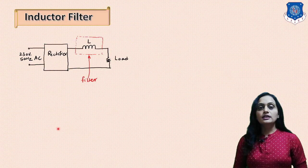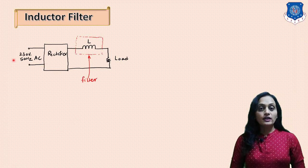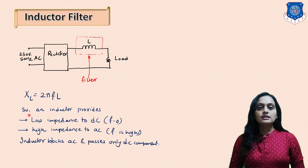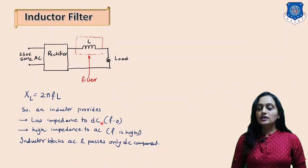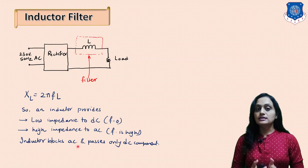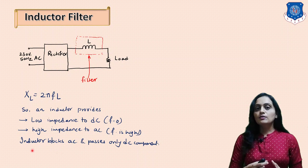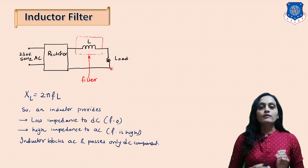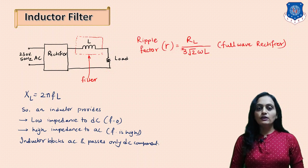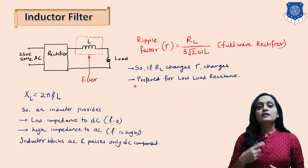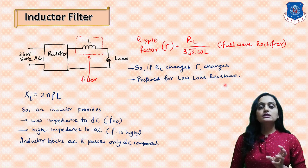Now we will see the inductor filter. The circuit diagram for the inductor filter is as shown. We have the rectifier block connected to the inductor, which is connected to the load. The inductive reactance XL equals 2πFL. This inductor provides low impedance path for the DC signal, where F equals 0, and provides very high impedance to the AC signal. So the inductor allows only the DC component to pass through it to the load, blocking the AC. For the full wave rectifier with this inductor filter, the ripple factor varies with the load, so this type of filter is preferred for small values of load resistance.